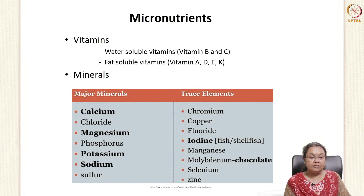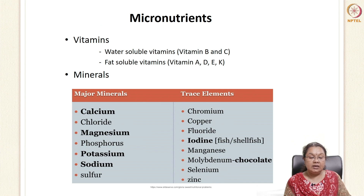We also have micronutrients like vitamins and minerals. Vitamins include water-soluble vitamins like B-complex vitamins and vitamin C, and fat-soluble vitamins like vitamins A, D, E, and K. Minerals include major minerals and trace elements. For example, fish is rich in iodine and chocolate is rich in molybdenum. Only when food is protected and well preserved can these nutrients reach the consumer.